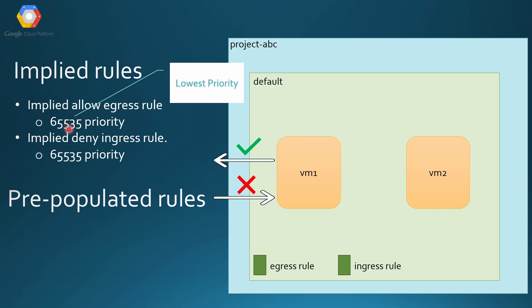The priority always starts from 0 to 65535 — 0 being the highest priority and 65535 being the lowest. So if you create another rule with priority 5000 to allow ingress traffic, it will overwrite the implied deny ingress rule.